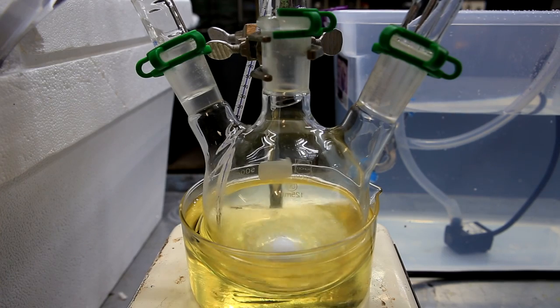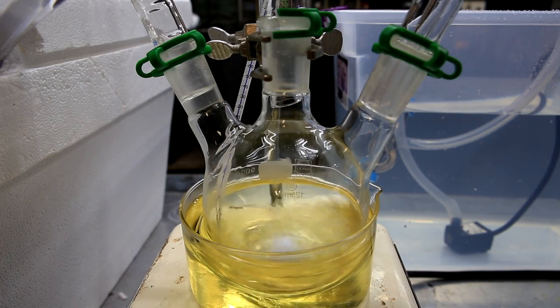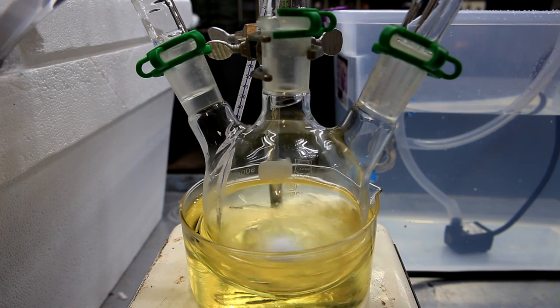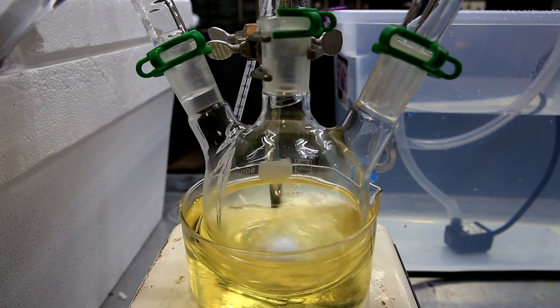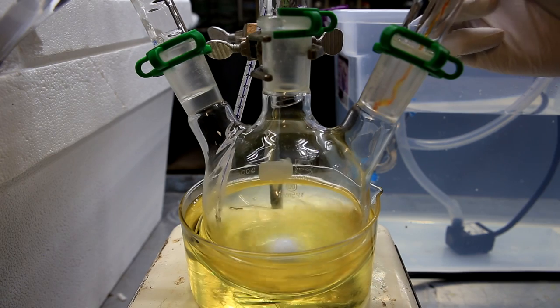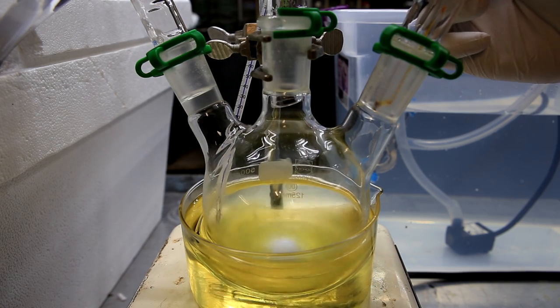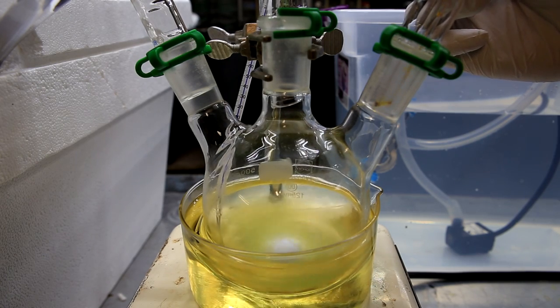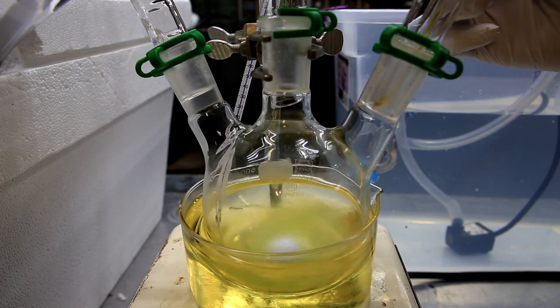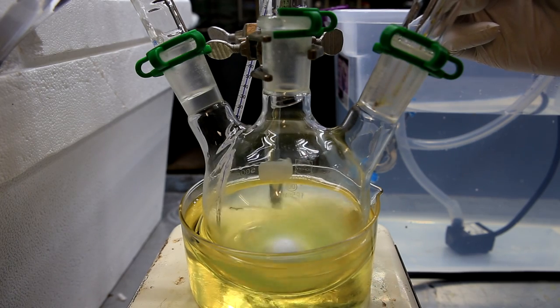To start off, we bring it to reflux and we can see that the n-propanol is refluxing back into the reaction flask. Once the reaction is boiling vigorously, we can dropwise add some of the chromic acid solution. You can see that immediately upon addition, it turns a green color.